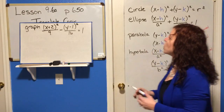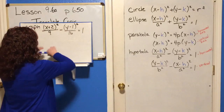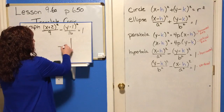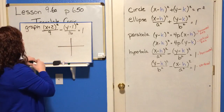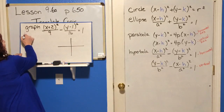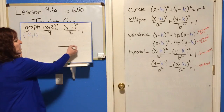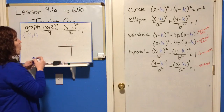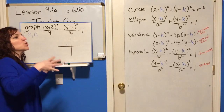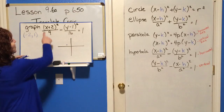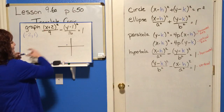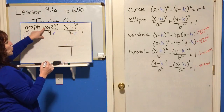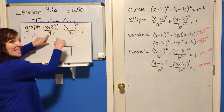So we've got a hyperbola. We need a graph, and the center is going to be negative two, one. From here, since this is the X term and nine is three squared and sixteen is four squared, we're going to go three to the right and three to the left from the center — not from the origin.